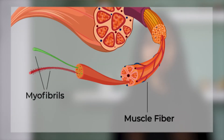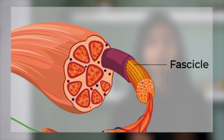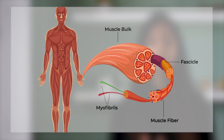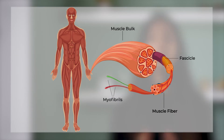These muscle fibers are closely packed together to form a fascicle. When these fascicles are bundled together and wrapped around by a connective tissue sheet, they will ultimately form your muscle bulk. To increase the size of your muscle, also called muscle hypertrophy in medical terms, you need to increase the diameter of each muscle fiber.